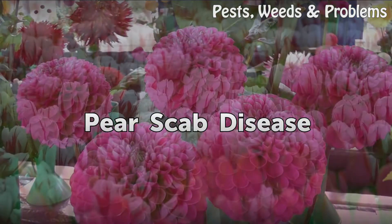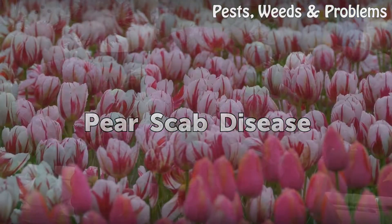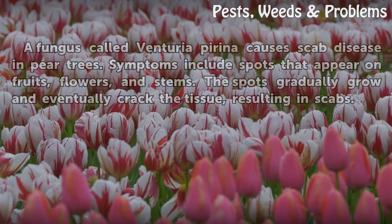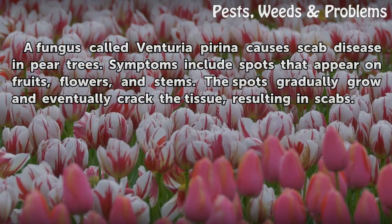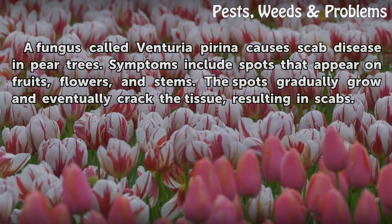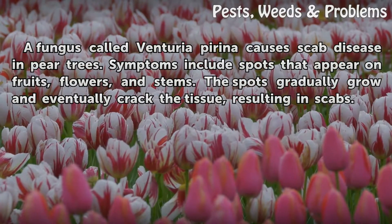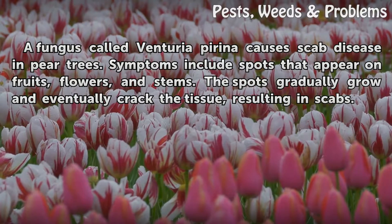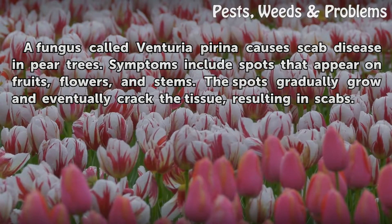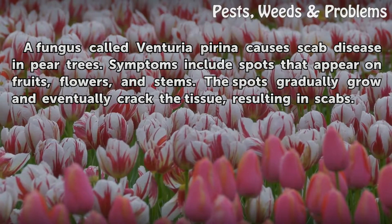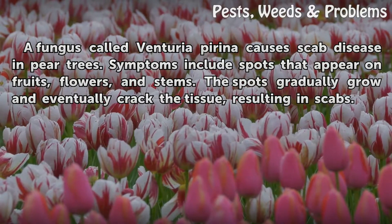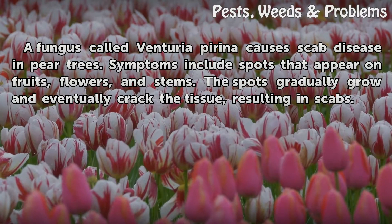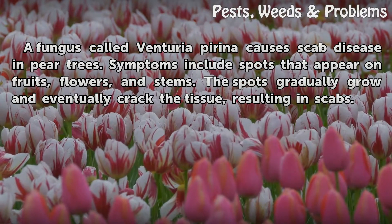Pear Scab Disease. A fungus called Venturia pyrina causes scab disease in pear trees. Symptoms include spots that appear on fruits, flowers, and stems. The spots gradually grow and eventually crack the tissue, resulting in scabs.